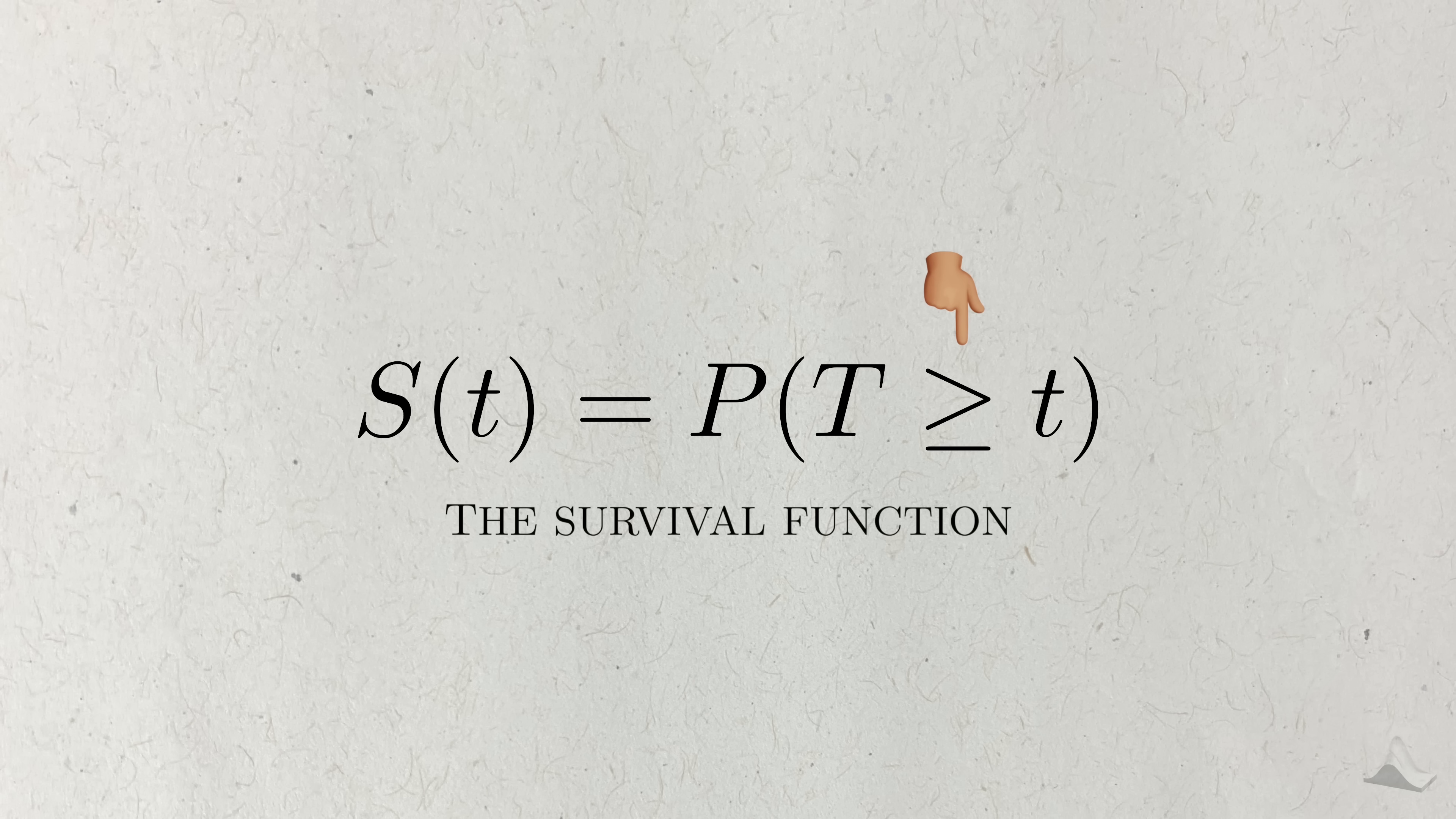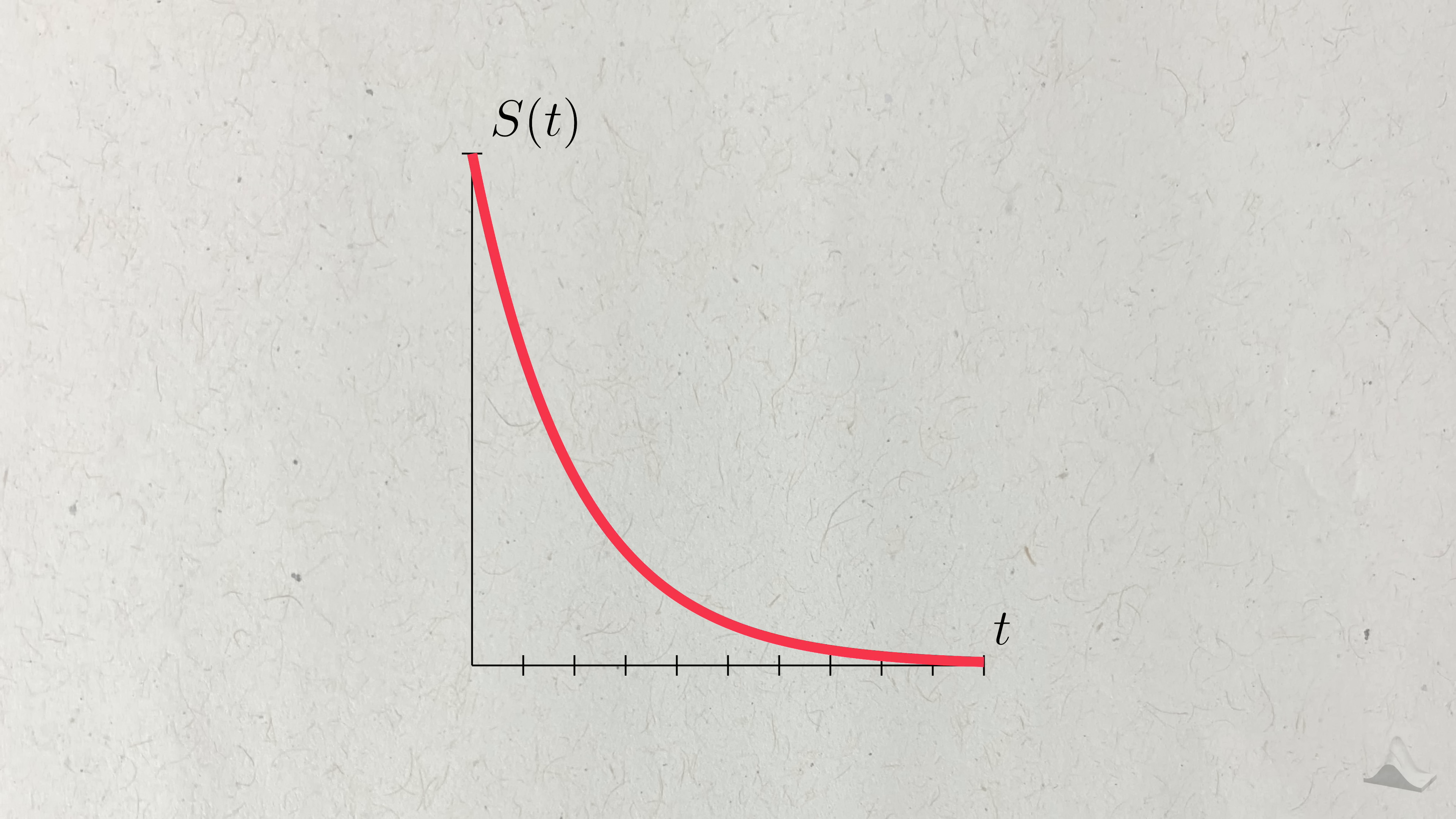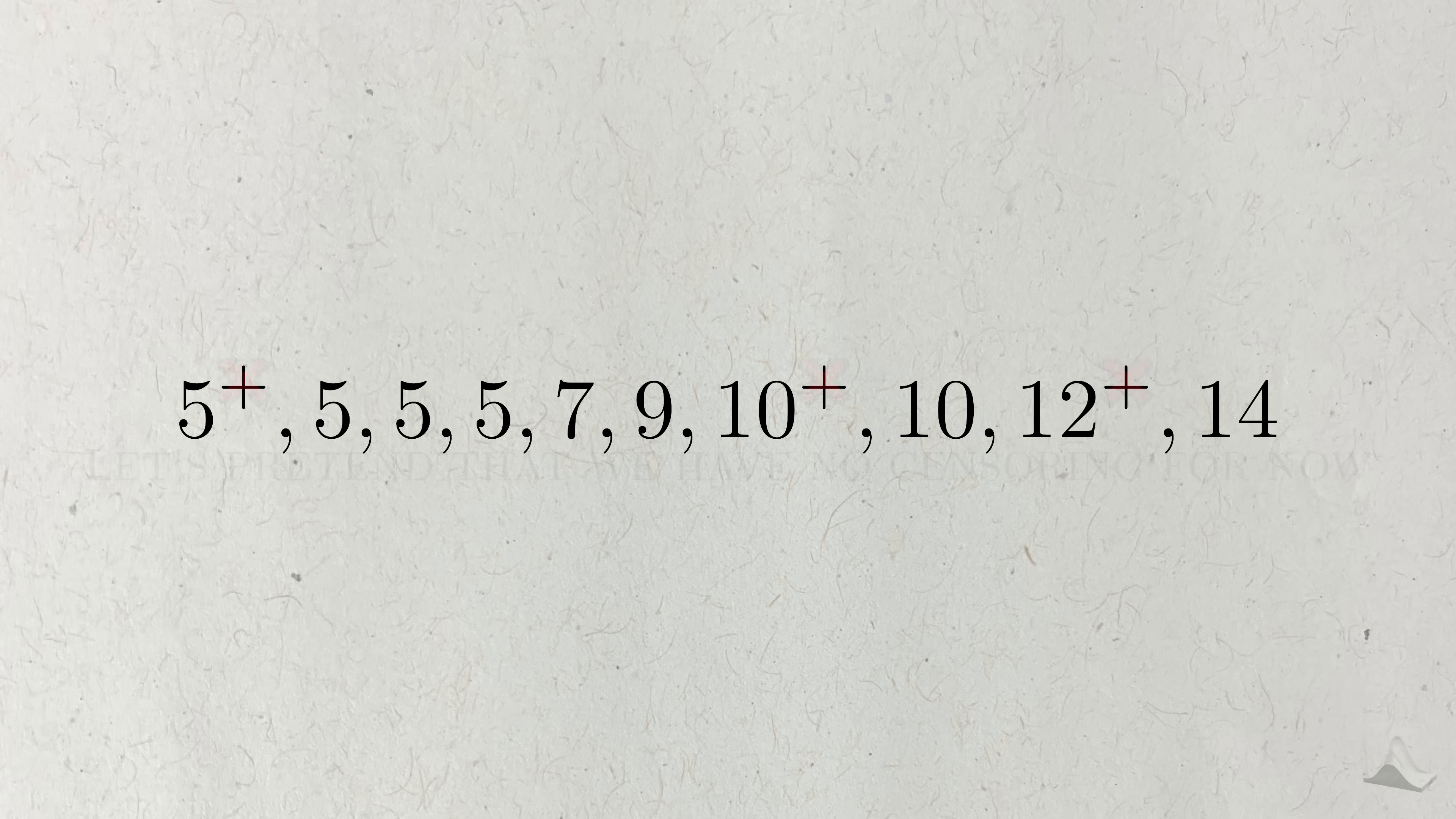For our purposes, we'll define the survival function as the probability of surviving at a time greater than or equal to some time t. If you're looking at different sources, you might find it defined slightly differently, so just be aware. Survival functions typically have this decreasing shape because we expect more people in a sample to experience the event as time goes on. Given a long enough time horizon, the survival function will eventually go to zero. But it's also possible to see survival functions stay above zero. This is common in clinical trials where the end of the trial is decided well in advance. As with most things in statistics, the true survival function is usually unknown, so we need to estimate it from data.